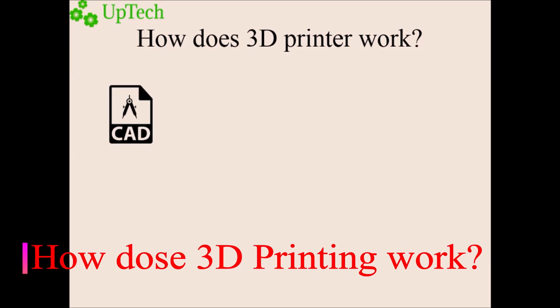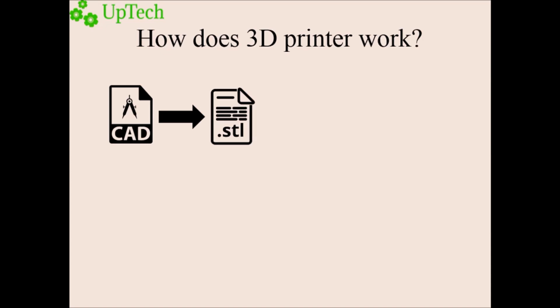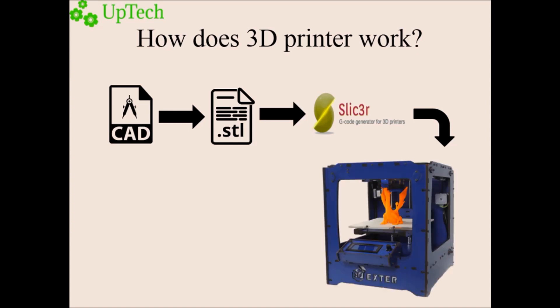How does 3D printing work? It all starts with the creation of a 3D model in CAD software. This 3D model is saved in STL file format, known as Stereolithographic file — also known as Standard Triangulation Language. Then this file is sliced into hundreds or thousands of horizontal layers with the help of slicing software. This software generates a set of instructions in the form of G-code. Further, this file is sent to the 3D printing machine and the final product is achieved.